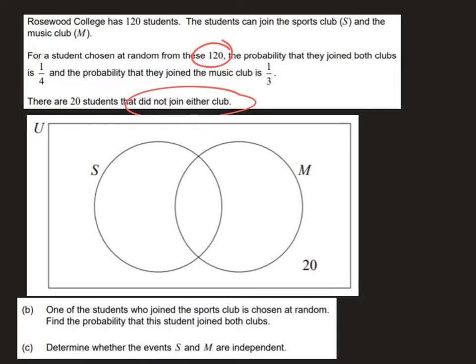So we are told that of the 120, the probability they join both clubs, that's going to be the intersection S and M, is a quarter. So we want to find a quarter of 120 which is going to give us 30. So we know there's 30 people in this intersection here between S and M.